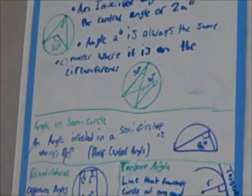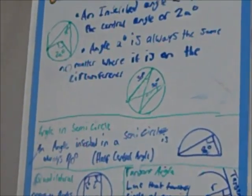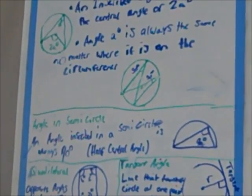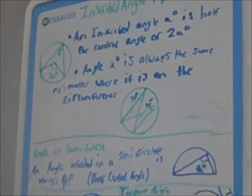The next theorem is used when there is a diagram drawn that has two inscribed angles whose legs end at the same points on the circumference. In this scenario, angle A will always be the same, no matter where it is on the circumference.